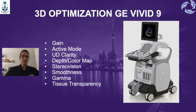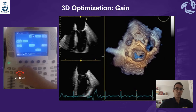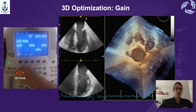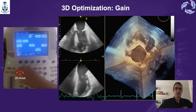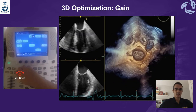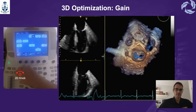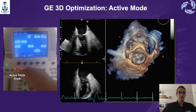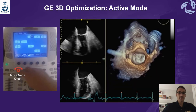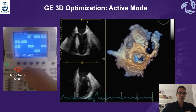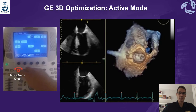If we want to optimize the GE image, we are going to talk about different things. We are going to start with 3D gain. You can see here an example of how we over-gain and how we actually decrease the gain progressively. This can be adjusted using the knob shown on the left side of the screen. You can also use active mode, which highlights the characteristics of the surface and is considered like 3D compression. You have the active mode knob to be able to do that, as shown on the left side of the screen.